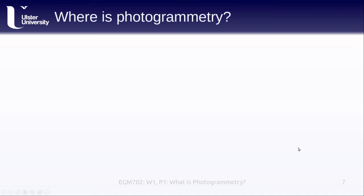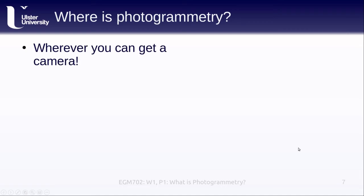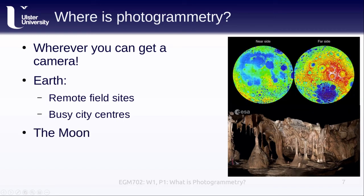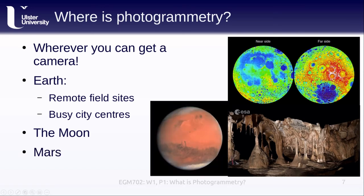So where do we do photogrammetry? Wherever we can get a camera. On Earth, that might be a remote field site such as the cave shown here in this photograph from the European Space Agency, or busy city centers like we saw with the aerial survey of New York City. We might also use photogrammetry to take measurements of the Moon, as has been done for quite a long while, or places like Mars — really, anywhere that we can get a camera and are interested in observing.